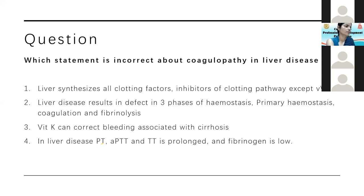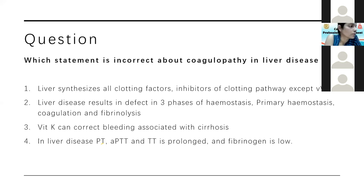MCQ question: Which statement is incorrect about coagulopathy in liver disease? Options: (A) Liver synthesizes all clotting factors and inhibitors of the clotting pathway except Von Willebrand factor; (B) Liver disease results in defects in all three phases of haemostasis — primary haemostasis, coagulation, and fibrinolysis; (C) Vitamin K can correct bleeding associated with cirrhosis; (D) In liver disease, PT, APTT, and thrombin time are prolonged and fibrinogen is low.